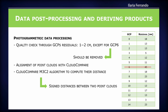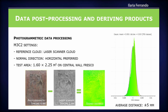We aligned the point clouds through Cloud Compare and also performed distance computation using the M3C2 algorithm, which gives the signed distance between the two point clouds — the laser scanner one and the photogrammetric one. As the reference cloud, we chose the laser scanner one, with a horizontally oriented normal direction. We performed this test on a portion of the central wall fresco. The photogrammetric point cloud has a spacing of four millimeters and the laser scanner one a spacing of one millimeter. We obtain an average distance of about five, plus or minus five millimeters, and we are quite happy with this result.